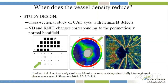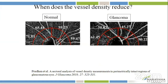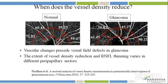For example, in this patient with a superior arcuate defect in the right eye, there's an obvious reduction in the inferior peripapillary vessel density and the inferior RNFL thinning. In our study, we measured the vessel density in the superior peripapillary area and compared these vascular and structural measurements with those of healthy eyes. Our study showed that the vessel density in the peripapillary and macular scans showed a reduction compared to normal in the perimetrically normal sector, showing that vascular changes definitely precede visual field effects in glaucoma.